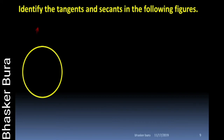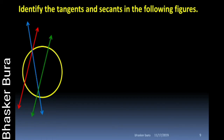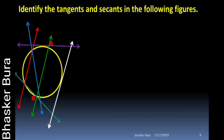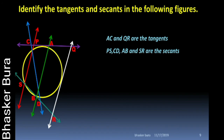Now identify the tangents and secants in the following figures. In this figure we have a circle and various lines are intersecting the circle. AC and QR are the tangents, as they are intersecting the circle at only one point. And PS, CD, AB, and SR are the secants.